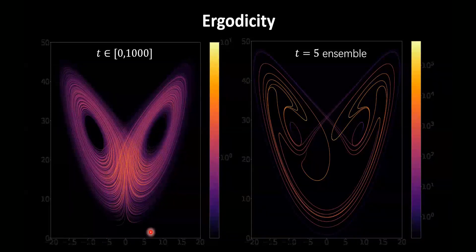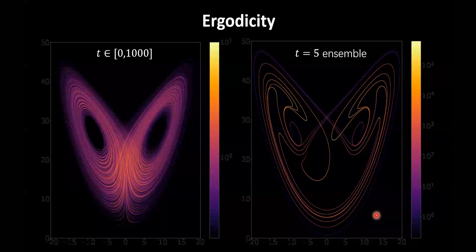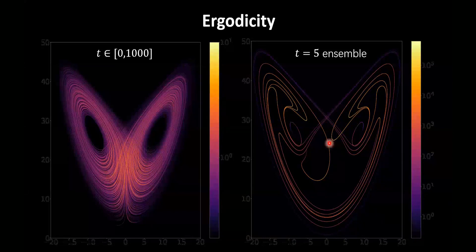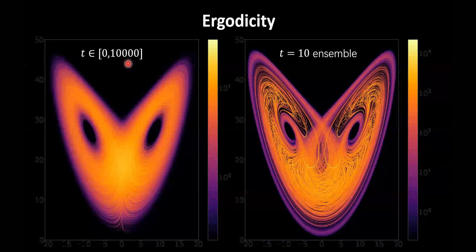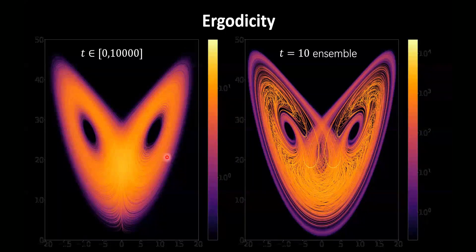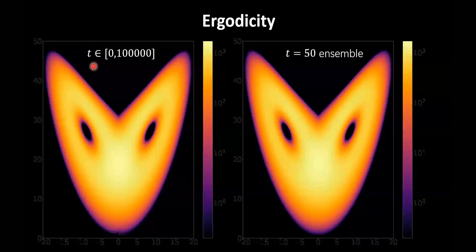On the left, you see the distribution of a trajectory in the x and z space when the trajectory had the length of 1000. On the right hand side, you see the evolution of an ensemble of initial conditions — when you evolve the ensemble starting from a tiny square, you evolve for five seconds and you get a distribution like that. Of course, the left and right look remarkably different. However, when you increase the time span on the left from 1000 to 10,000, and on the right you evolve for another five seconds, they look more similar between each other.